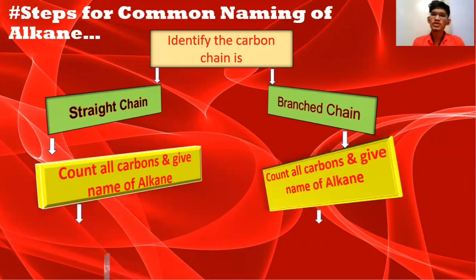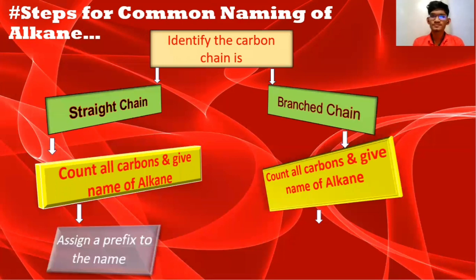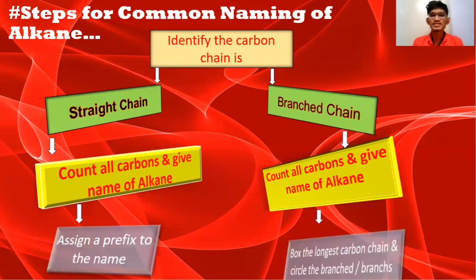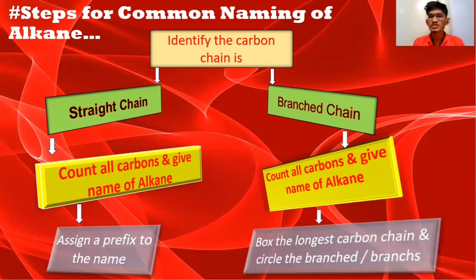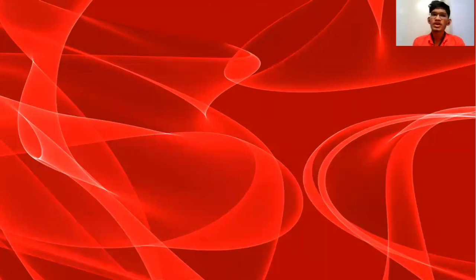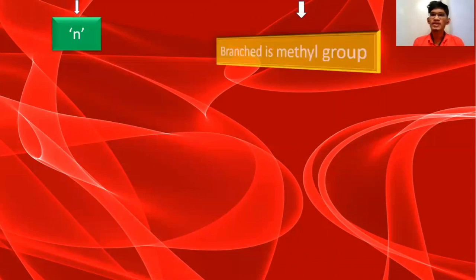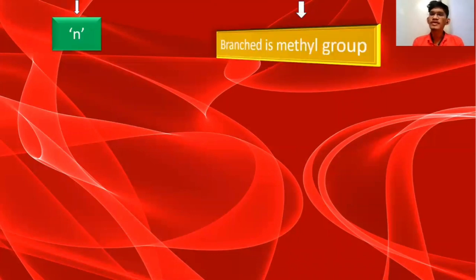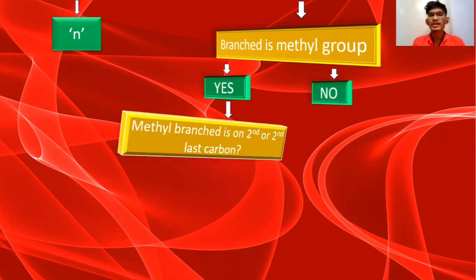In case of a straight chain, you have to assign a prefix to the name — that prefix is the small letter n. In case of a branch chain, you box the longest carbon chain and circle the branch or branches. Then you check whether the branch attached to the carbon belongs to a methyl group or not. If it does not, you simply write no common name.